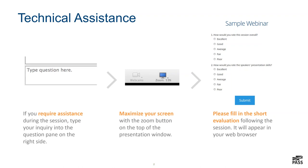I have a few introductory slides before I hand over to Rick. If you require technical assistance, please type your question into the question pane located on the right side of your screen, and someone will assist you. This question pane is also where you may ask any questions throughout the presentation. Feel free to enter your questions at any time, and once we get to the Q&A portion of the session, I'll read your questions aloud to the speaker. You are able to zoom in on all presentation content by using the Zoom button located on the top of the presentation window. Please note that there will be a short evaluation at the end of the session — your feedback is important to us.